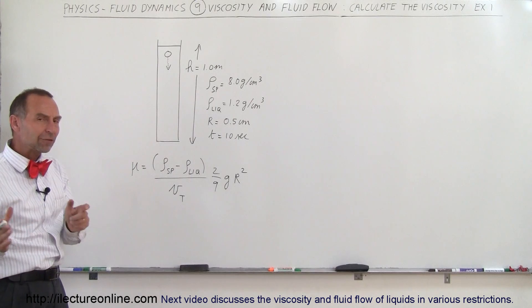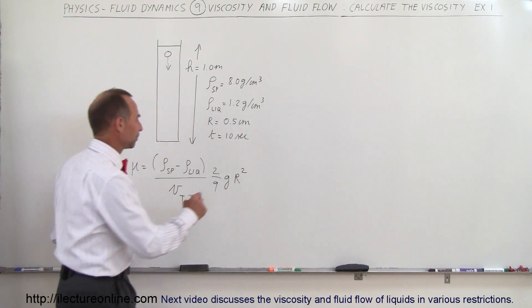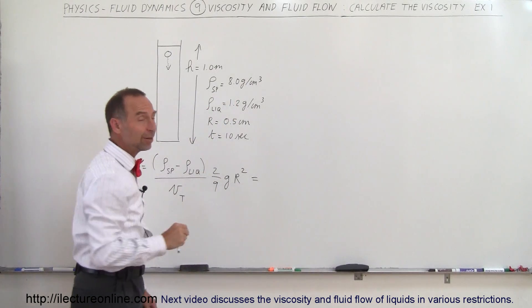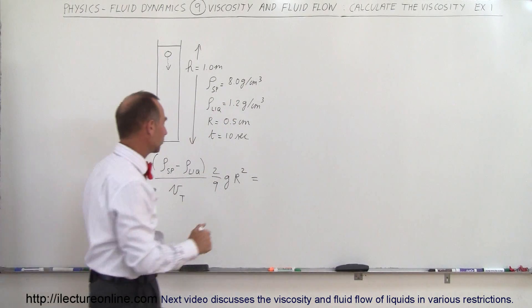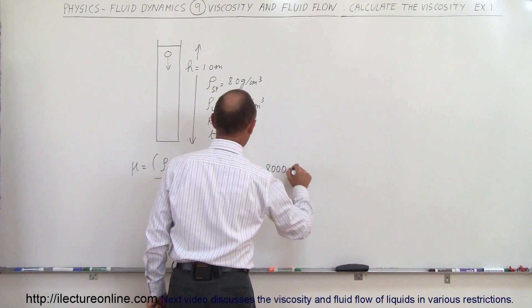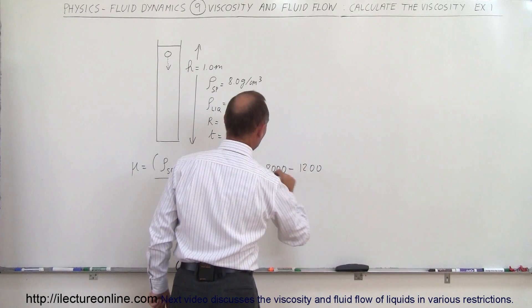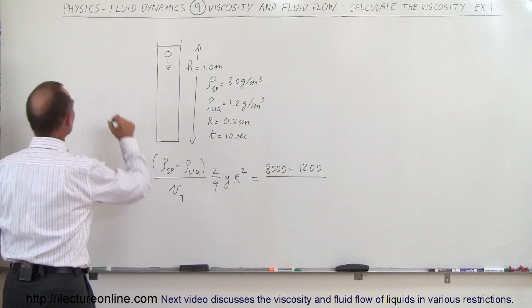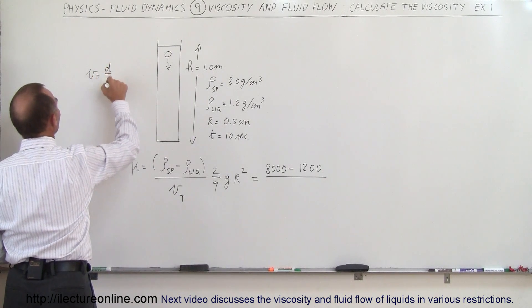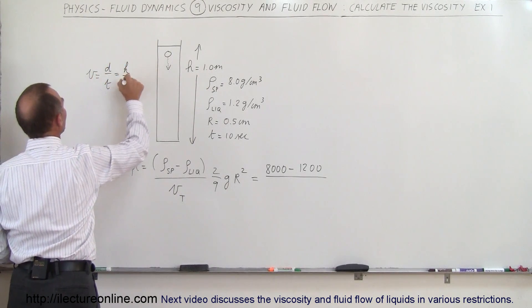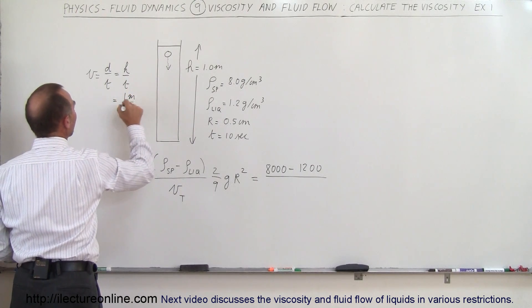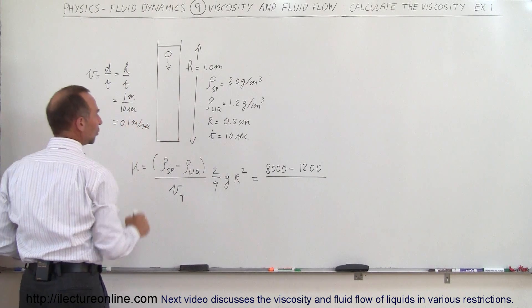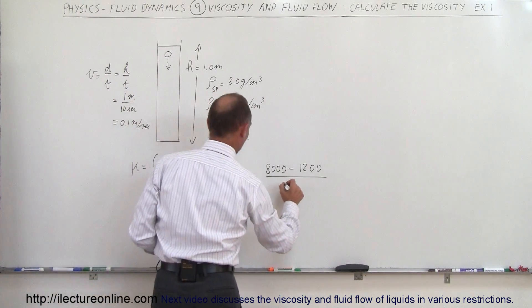Now let's plug in the numbers. We have to convert to SI units of course. The density of the sphere is 8 grams per cubic centimeter, that's 8,000 kilograms per cubic meter. So we have 8,000 minus 1,200, divided by the terminal velocity. It falls a meter in 10 seconds, so velocity equals distance divided by time: 1 meter divided by 10 seconds equals 0.1 meters per second. That goes in the denominator.